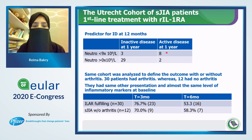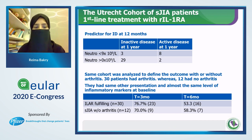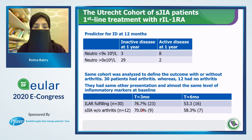The same cohort showed that a higher neutrophil count at presentation predicts inactive disease at 12 months — 29 patients with higher neutrophil counts showed better response and reached inactive disease at one year compared to those with low neutrophil counts. The cohort was also analyzed to define outcome with or without arthritis: 30 patients had arthritis and 12 had no arthritis, with similar lab results at baseline. Results showed that more than 70% had inactive disease by three months and more than 50% by six months in both groups, supporting the idea that arthritis is not a major defining characteristic of systemic JIA.